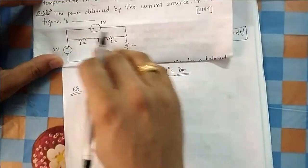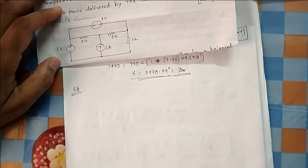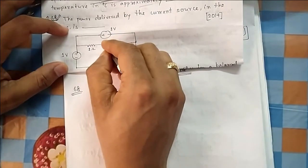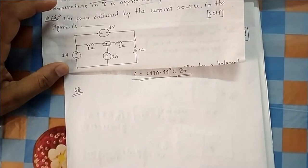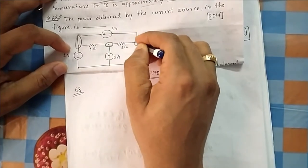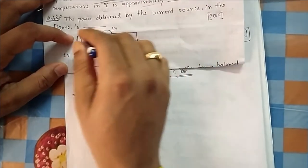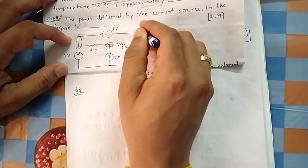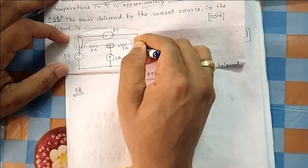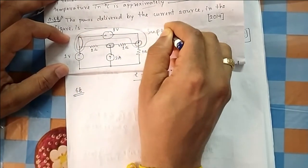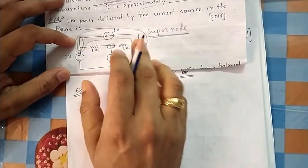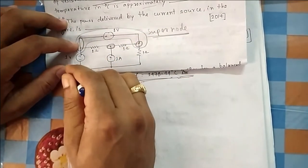Question 68: the power delivered by the current source in the figure. If I can find the voltage across the current source, my job is done. This voltage is 1 volt. Now, regarding this node — a voltage source is connected between two nodes here, which means this becomes a supernode including the adjacent node. This is the concept of the supernode.